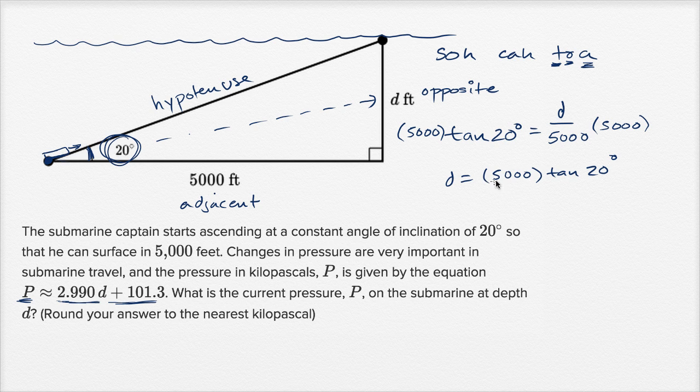And then we can take whatever this value is and substitute it down here and round to the nearest kilopascal. Well tangent of 20 degrees, we're gonna need a calculator for that, and luckily we have one.